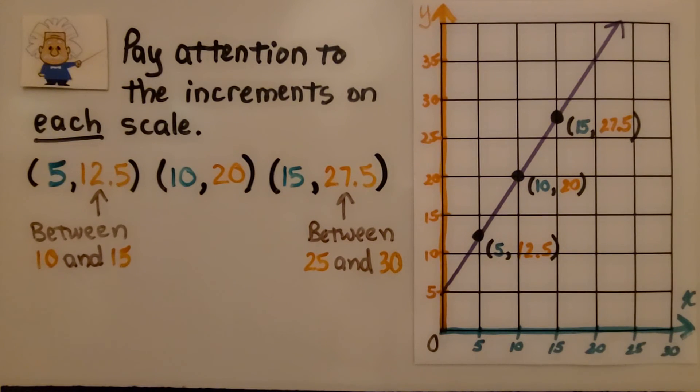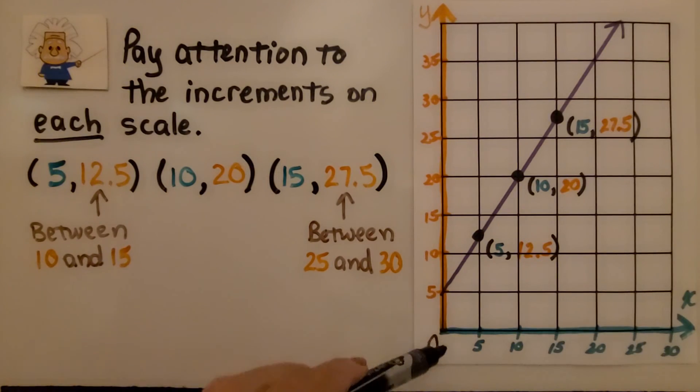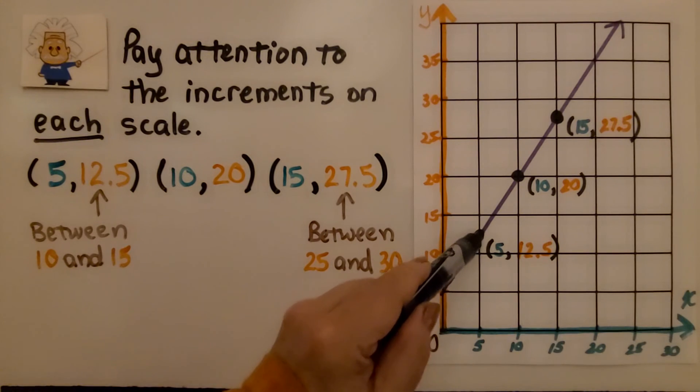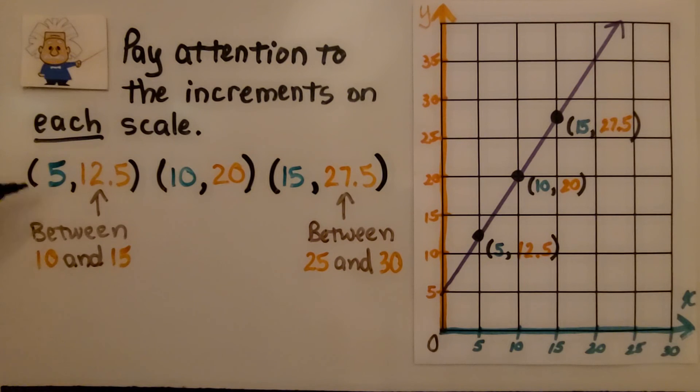We need to pay attention to the increments on each scale. Here we can see they're skip counting by 5s, but this point is at 5 for x, and it's in between 10 and 15 for y. In between 10 and 15 would be 12.5.